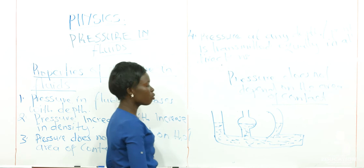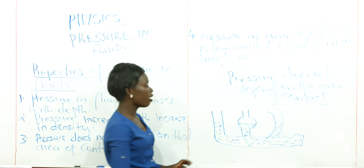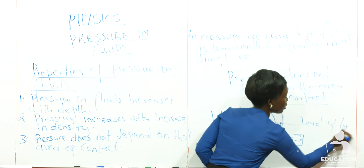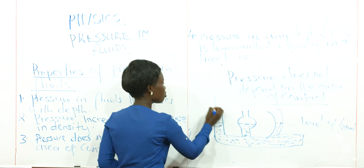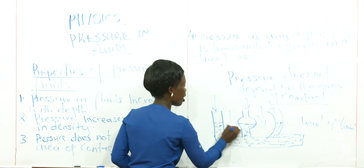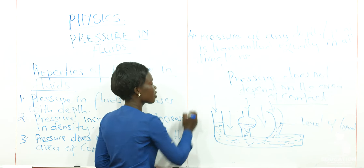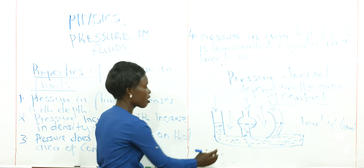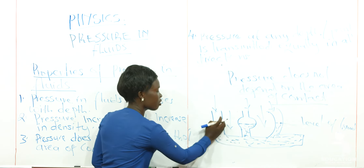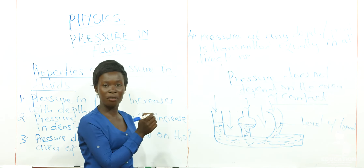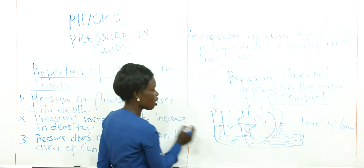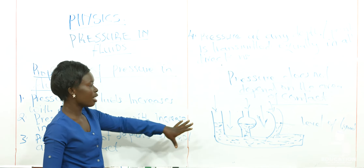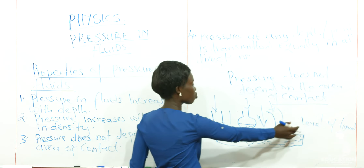However much the sections differ — this area can be bigger than this and this one is small — still the liquid rises at the same level. Why? This is because the atmospheric pressure acting on this liquid is the same across all the tubes. Because the atmospheric pressure is the same, it forces the liquid to rise at the same level in all sections. This is how pressure does not depend on the area of contact.